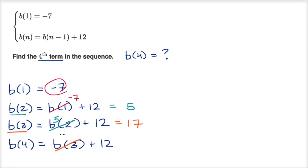If b(3) equals 17, then we're ready to calculate b(4). It's b(3), which is 17, plus 12, which equals 29. And we're done.